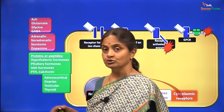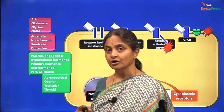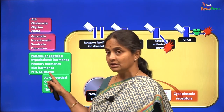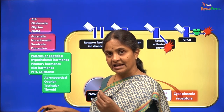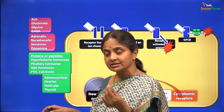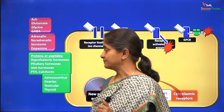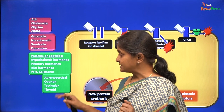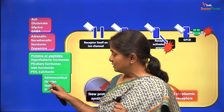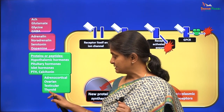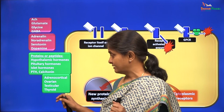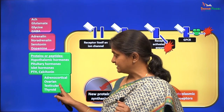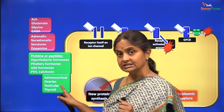The islet hormones are insulin and glucagon. Then we have parathormone and calcitonin, which are secreted from glands located within the thyroid gland. There is the adrenal cortex, the ovary, testes and the thyroid gland per se. Hormones of the adrenal cortex, ovaries and testes are steroids.